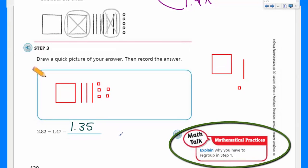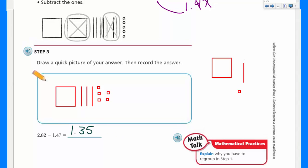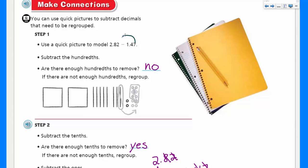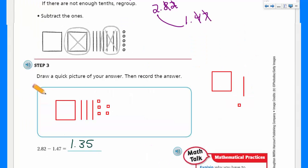Mathematical practices. It says, explain why you have to regroup in step one. This is common when you're dealing with place value because obviously I had to regroup in step one because I did not have enough hundredths to remove seven hundredths. That was the problem. I didn't have enough. So I had to regroup. Yes.